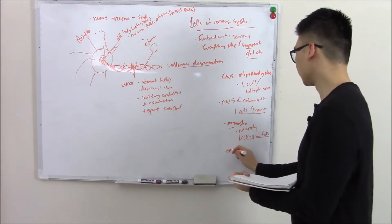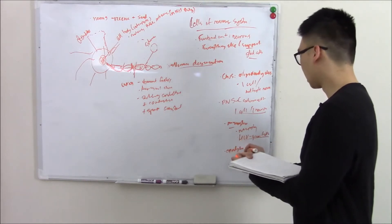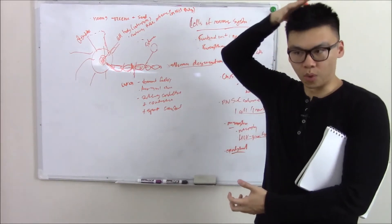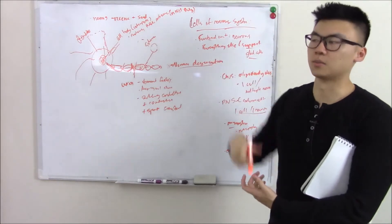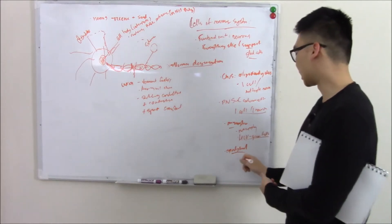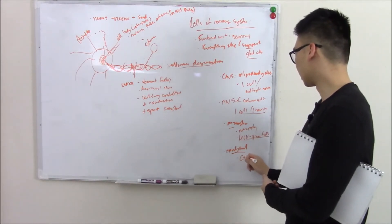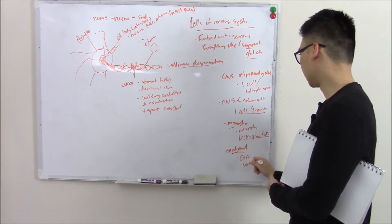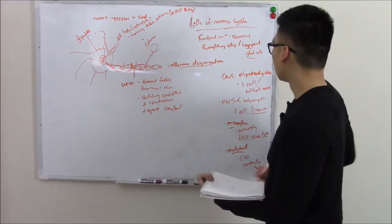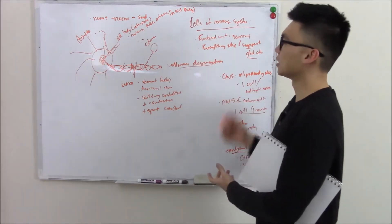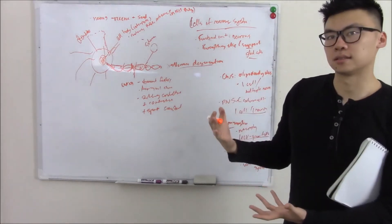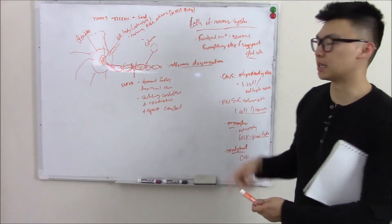And last but not least, ependymal cells. We're going to talk about the ventricular system in further videos, but the ventricular system is basically this buoyant water balloon inside of your brain, and it's filled with CSF, cerebrospinal fluid. And the thing that makes that CSF is your ependymal cells. So it makes CSF and it lines your ventricular system. Keep that tucked away in the back of your mind. And if there's damage to your brain, damage to your CNS, then all these support cells will proliferate more. We call that gliosis - proliferating more to help your CNS.